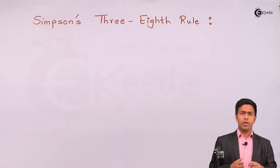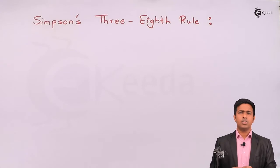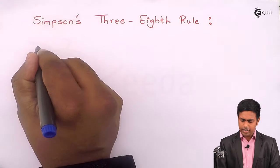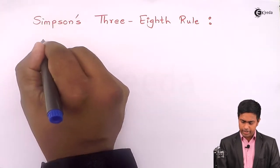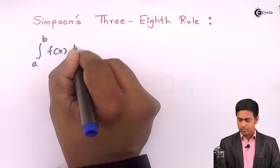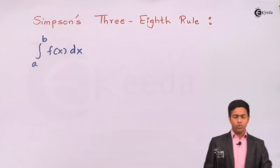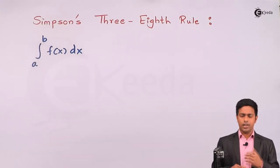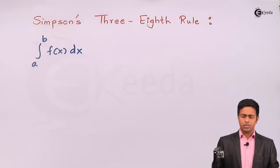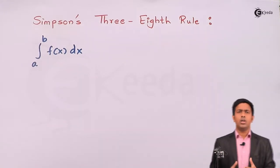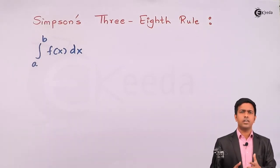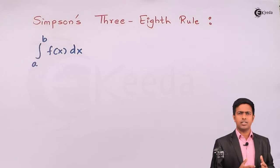To get the answer of definite integration using Simpson's three-eighth rule, we must know the sub-intervals between the end points. Let's say we have integration from a to b of f(x) dx. If we know the sub-intervals between a and b, we can get the value of this integration. We generally use this rule whenever the evaluation of integration is difficult or gives a complicated answer.